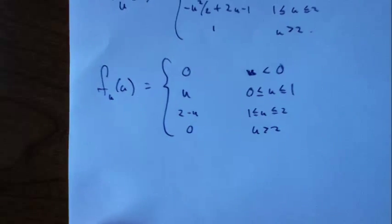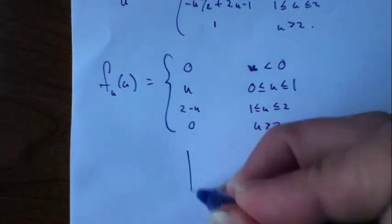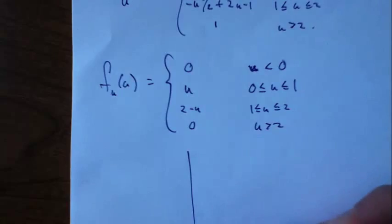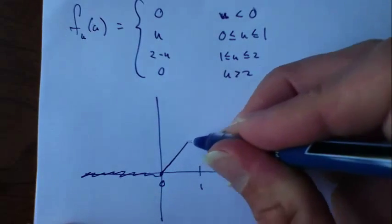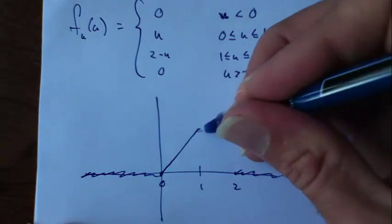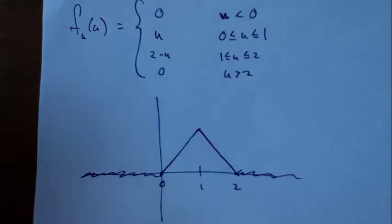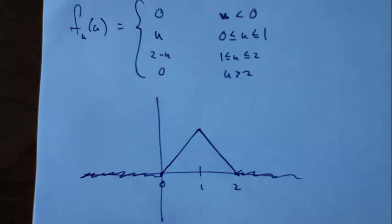Let's graph that, just for fun. Take a look at the graph. I know that this guy is 0 out here. This is 1, 2, 0. So it's linear there, and then it comes down like this. It's a triangle shape. Very nice.